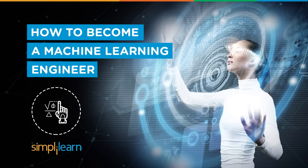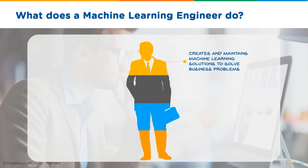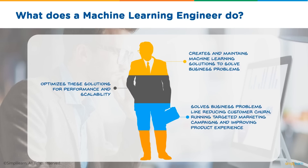Hi guys, I'm Rahul from Simply Learn and today I'm going to tell you how you can become a machine learning engineer. A machine learning engineer creates and maintains machine learning solutions to solve business problems. They constantly tweak and optimize the solutions for maximum performance and scalability. They solve business problems like reducing customer churn, running targeted marketing campaigns, improving product experience, and predicting whether a particular hypothesis will be profitable in the future. They also contribute to cutting-edge research in AI and machine learning.